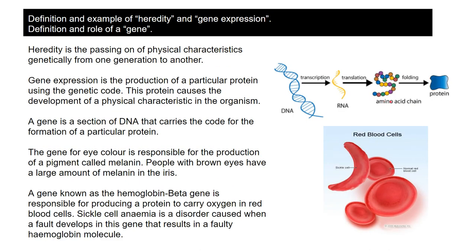We want to look at the phrases heredity, gene expression, and the role of a gene. Heredity is the passing on of characteristics and traits from one generation to the next - inheriting the things that make us different, like hair colour and eye colour, and also inheriting the things that make us uniquely human. Gene expression is the production of a particular protein using the genetic code, and that protein is what causes the physical trait or the characteristic.